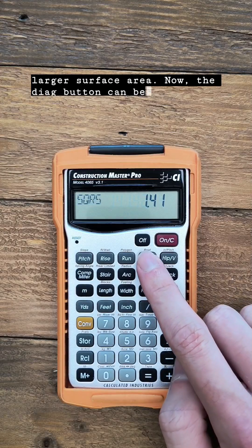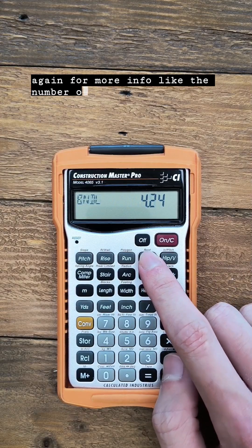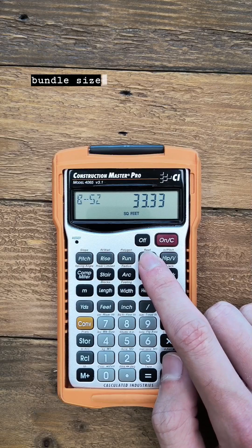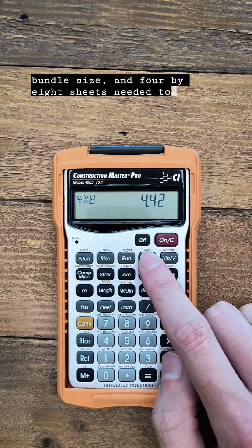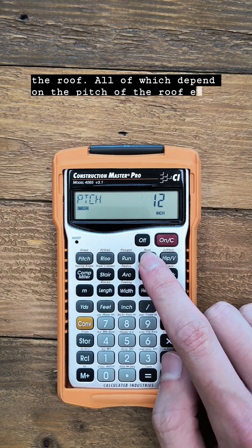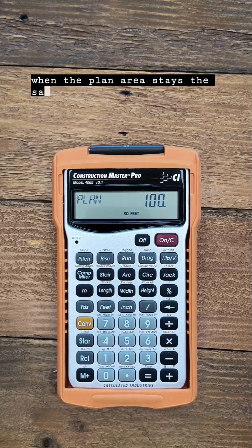The diag button can be pushed again for more info like the number of squares, bundles, bundle size, and 4×8 sheets needed to cover the roof—all of which depend on the pitch of the roof, even when the plan area stays the same.